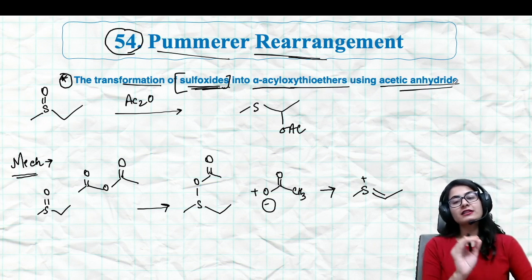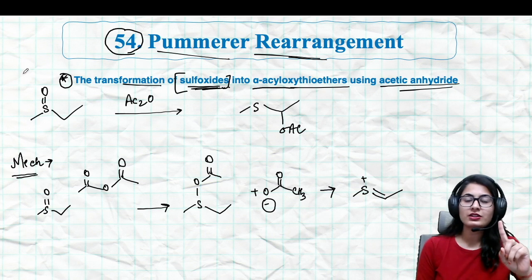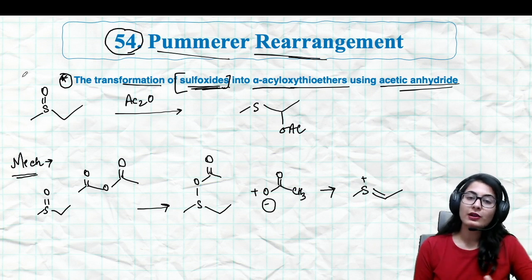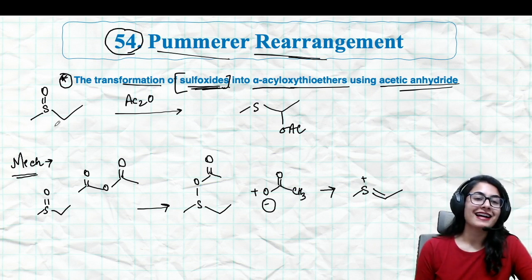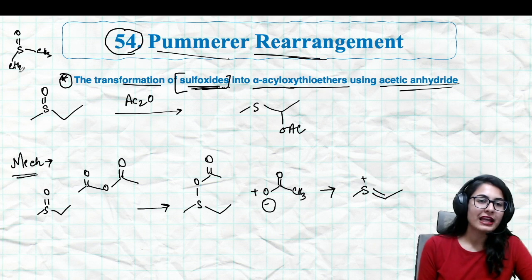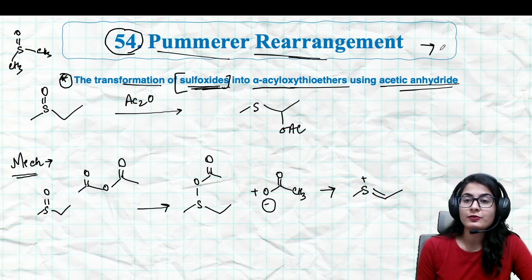Transformation of sulfoxides into alpha acyloxy thioethers using acetic anhydride. A plain simple reaction. You're starting with a sulfoxide - sulfur having one oxygen is a sulfoxide, sulfur having two oxygens is a sulfone, sulfur having no oxygen is a sulfide, as simple as that. Just like your DMSO, dimethyl sulfoxide.